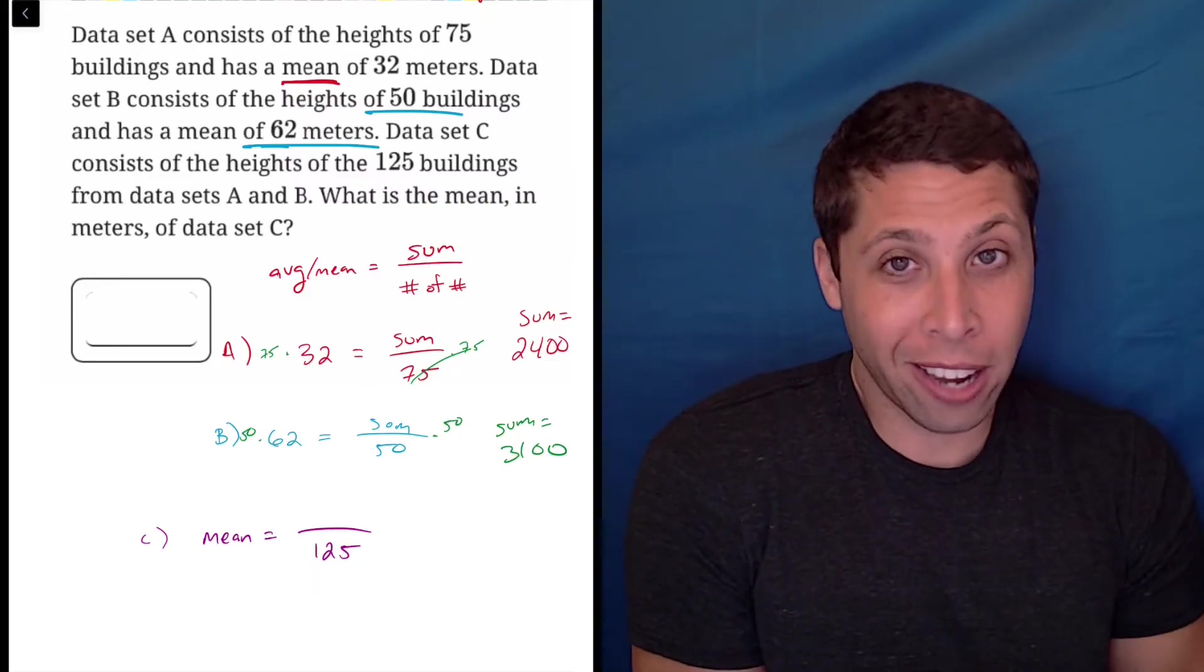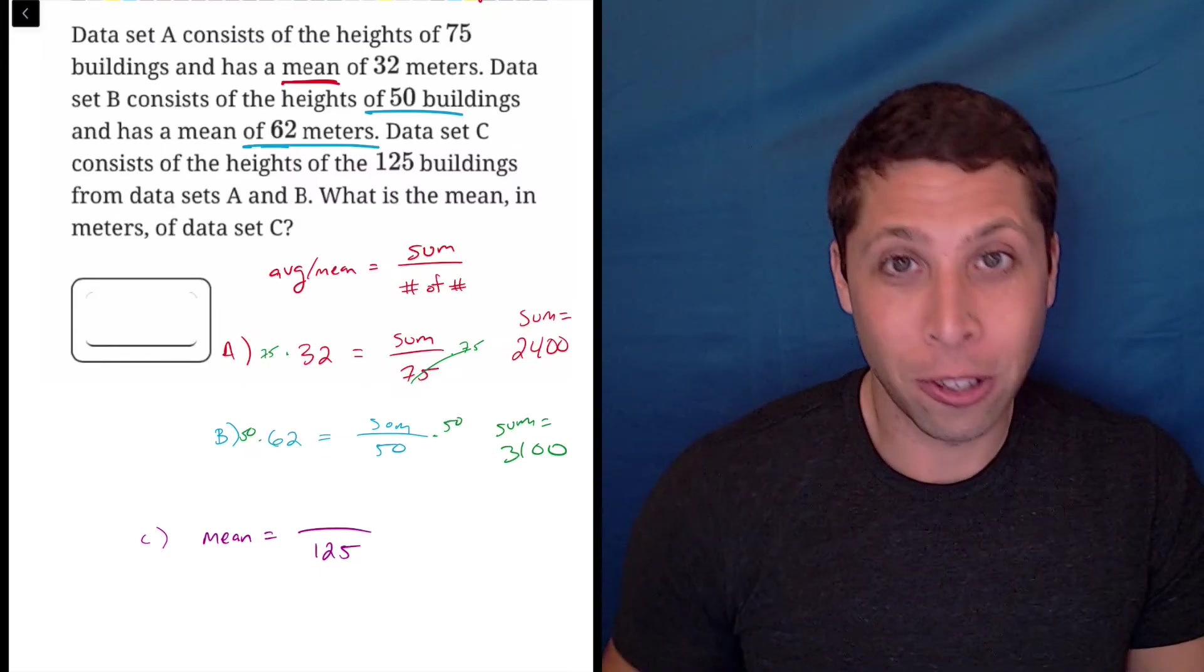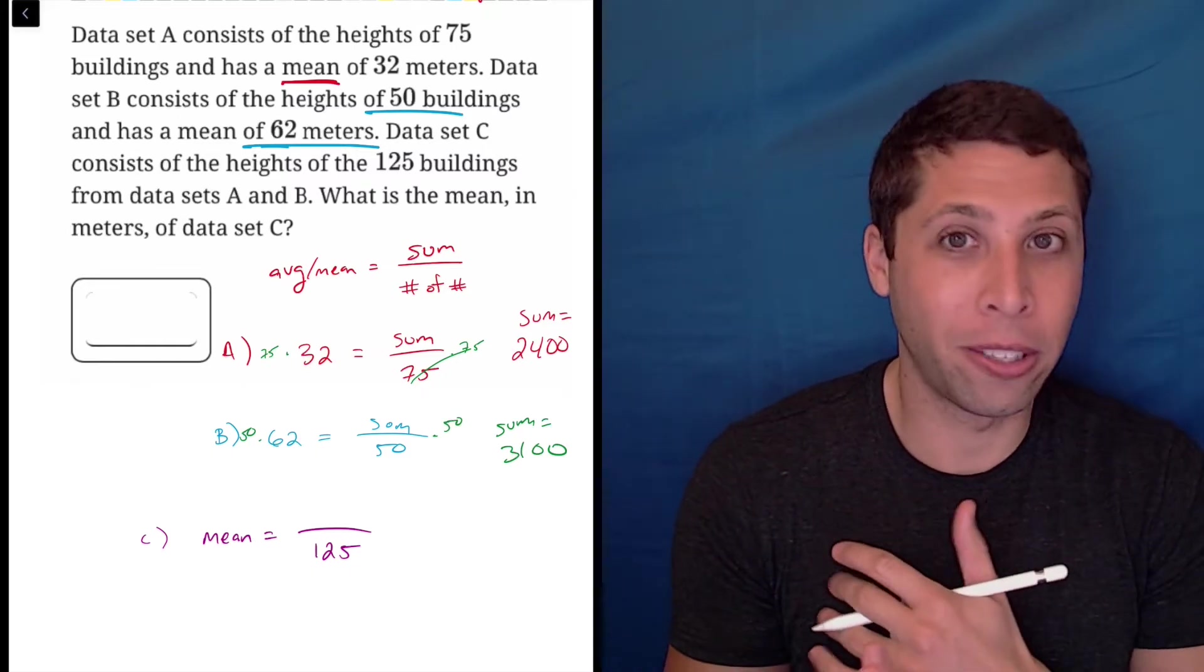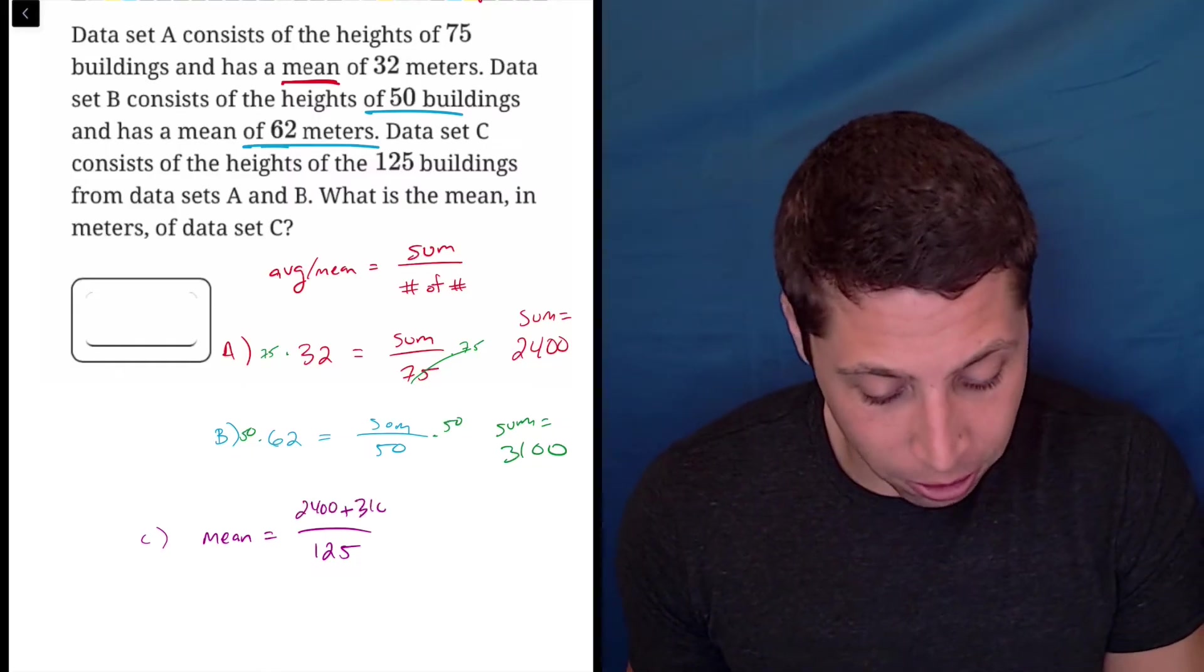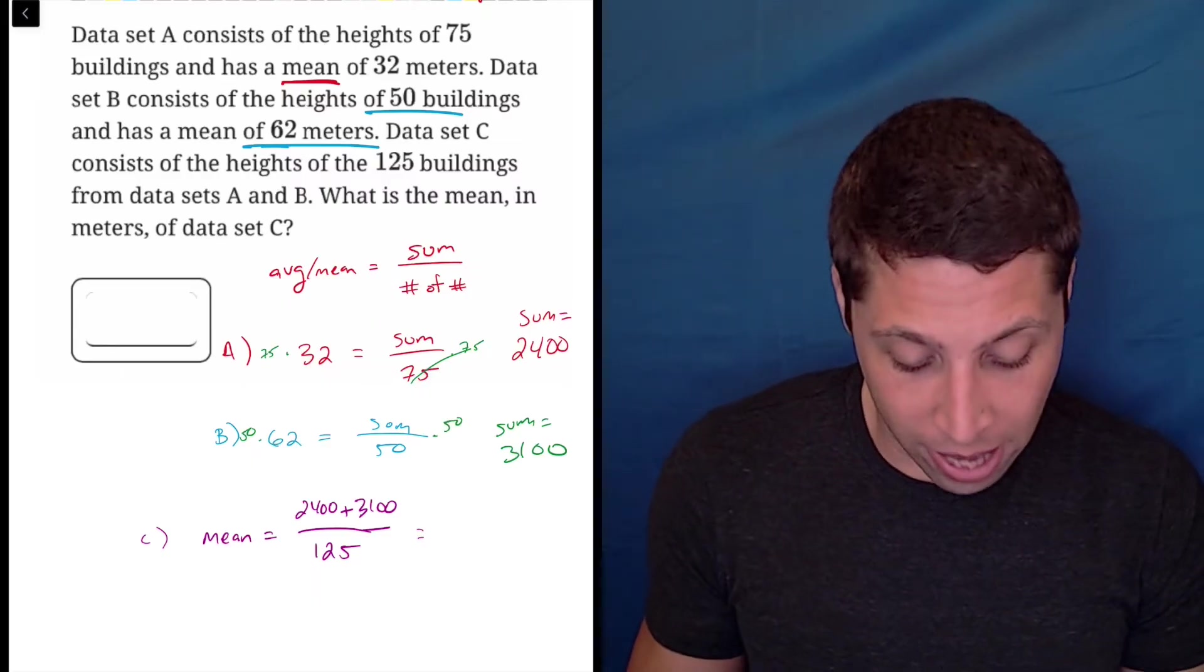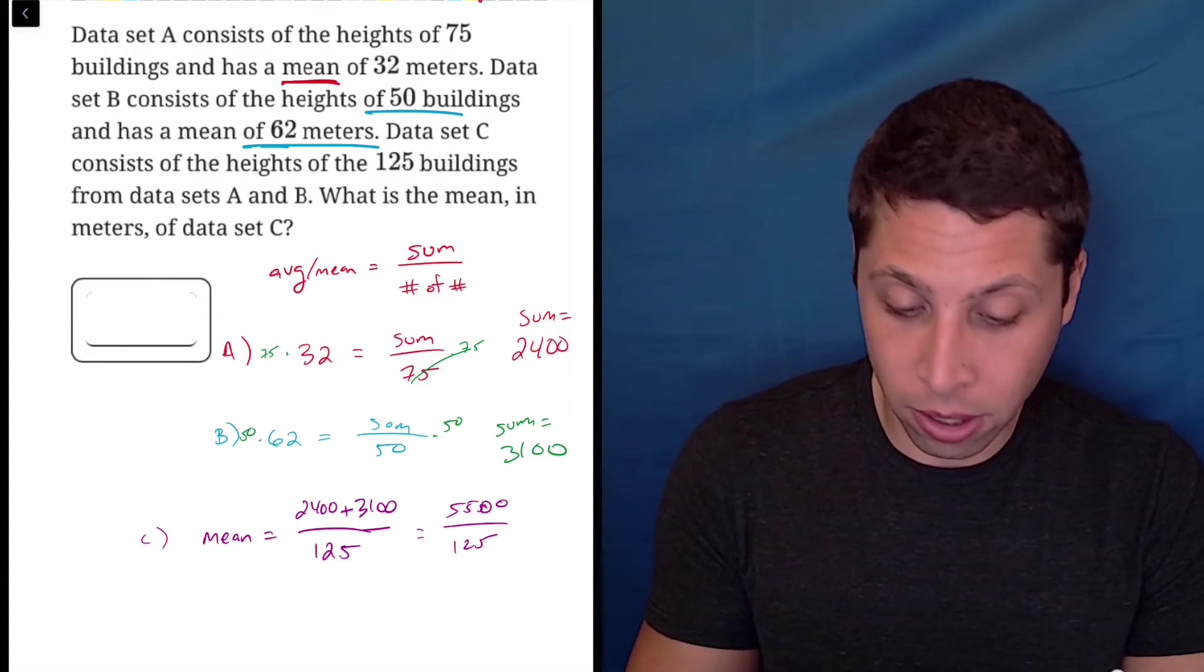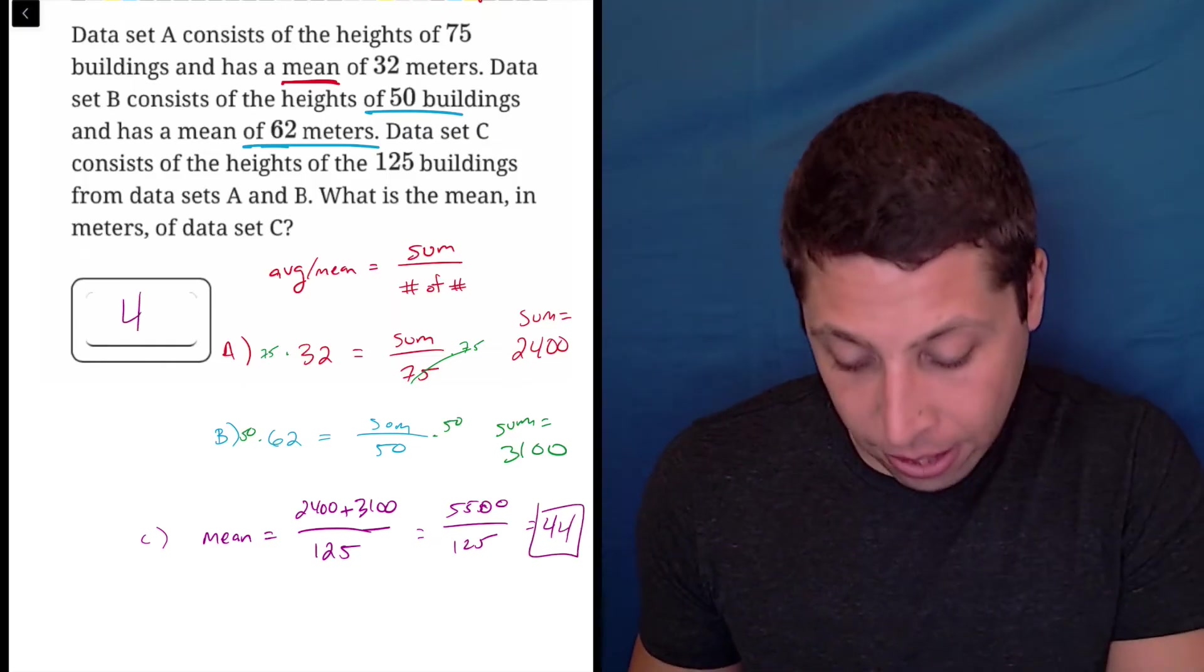Using just the most basic math and logic, I got two sums for the two sets of buildings separately. Set C is asking me to combine the two sets. So why don't I just combine the two sums? So 2,400 plus 3,100 feels like a sum. That's 5,500 over 125. 5,500 divided by 125 is 44. And that's the answer.